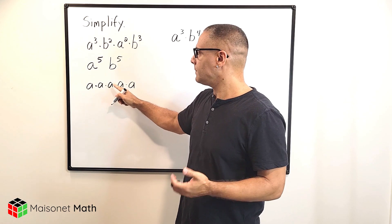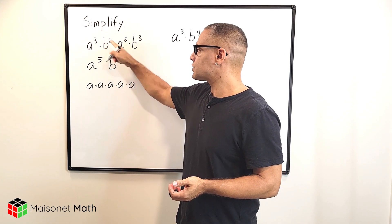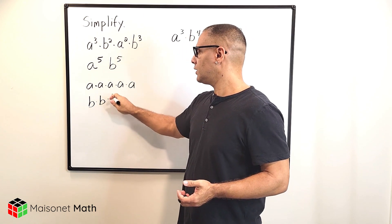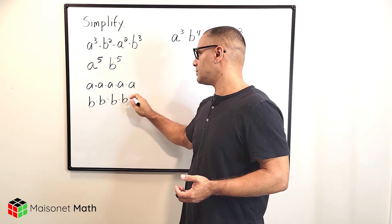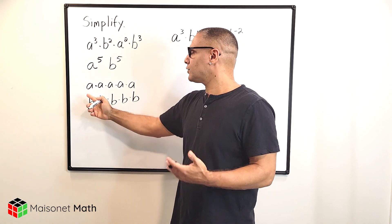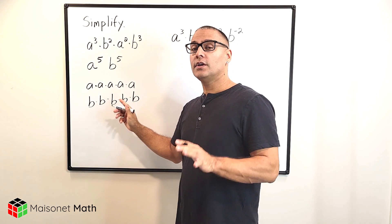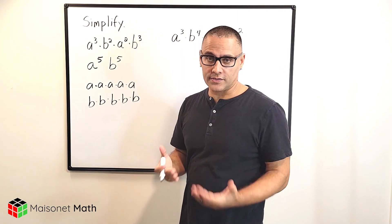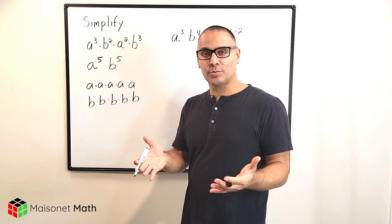And if we did the same thing with our b's, we have b squared or just b times b, and then we have b cubed or b times b times b, which would give us b to the fifth. But you don't have to go writing these in expanded form. Just follow the rule that when you multiply variables that are the same, you simply add their exponents.